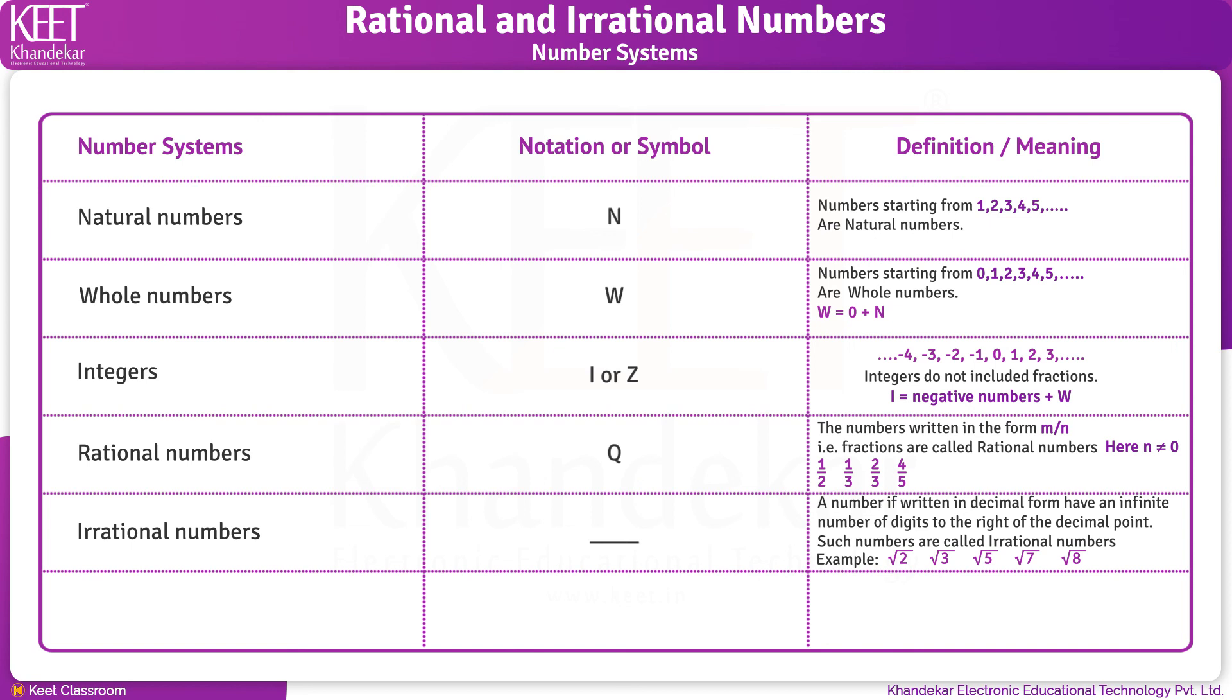Now, the next number system is real numbers, which is denoted by symbol R. Real numbers include all the above number systems. The numbers that can be shown on number line are called real numbers.